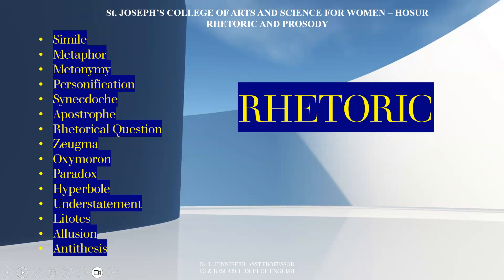Oxymoron: a phrase that combines two words that seem to be the opposite of each other. Paradox is a statement that contains two opposite ideas which seem to be impossible. Hyperbole: In Greek, this word means 'overshooting'. It would be a bold overstatement which makes the language sound better and more exciting. Understatement: In Greek, there is a term called 'meiosis' which means lessening. This figure of speech represents something as much less in importance, and sometimes it can be ironic.